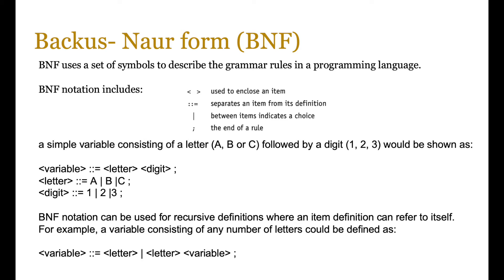Let's consider a simple variable which consists of letters A, B, or C, followed by digits 1, 2, or 3, in line with our syntax diagram earlier. We can write this in BNF by saying: angle-bracket variable angle-bracket, colon-colon-equals, the letter item followed by the digit item, with a semicolon at the end to indicate the rule is complete. Similarly, the letter item can be defined as A or B or C, and the digit can simply be 1 or 2 or 3. That rule is straightforward to read — much simpler for us humans — and we can understand the logic a lot more clearly.